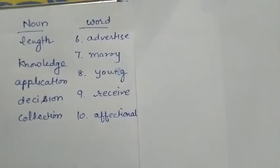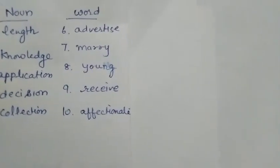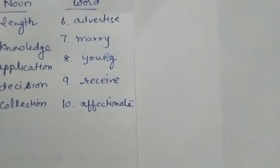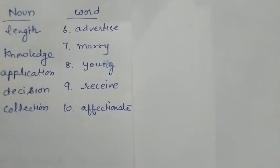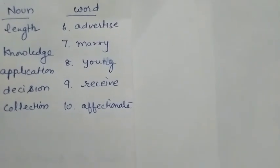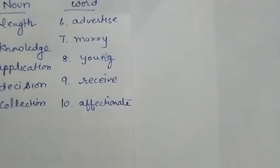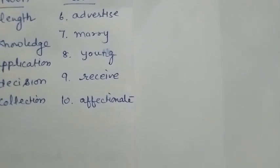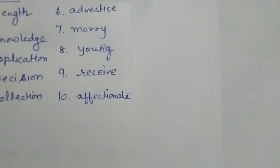In the same way, other words: Advertise, marry, young, receive, and affectionate. What will be the noun forms of these words? Advertise is a verb, marry is a verb, young is an adjective, receive is a verb, affectionate is also a verb.